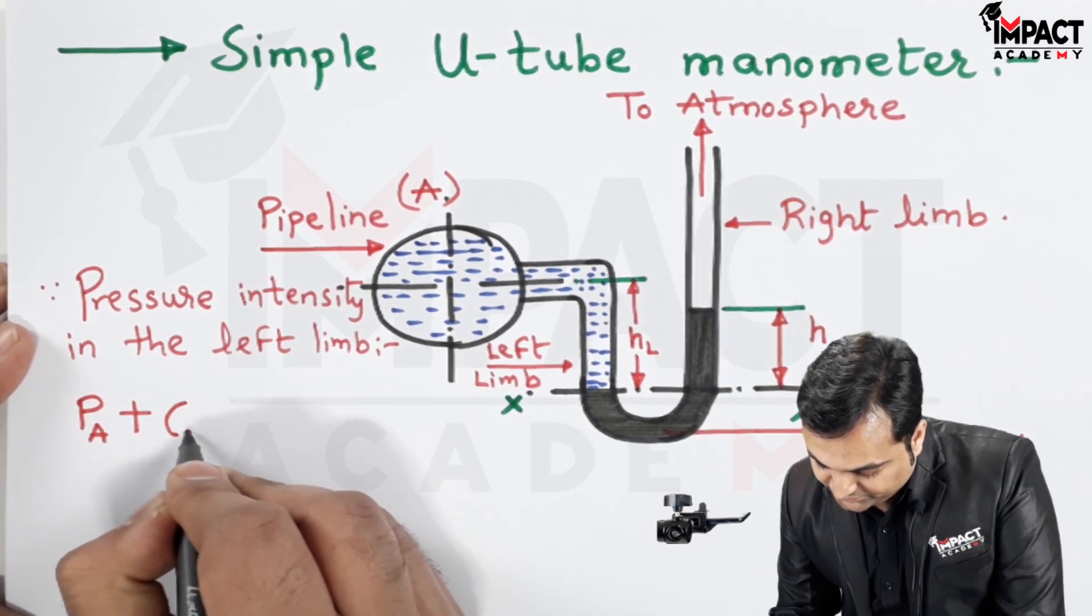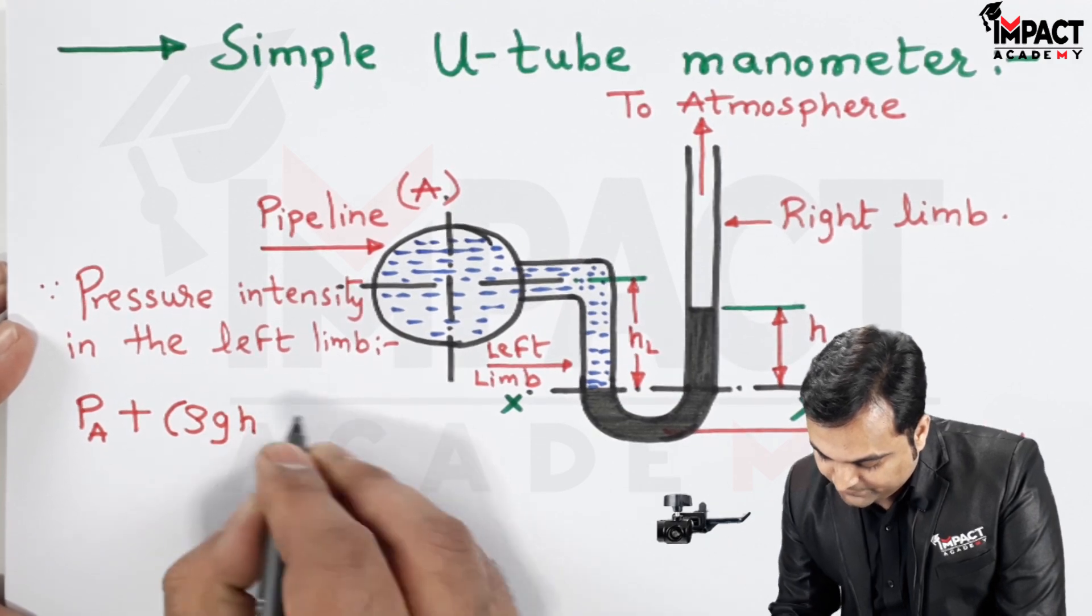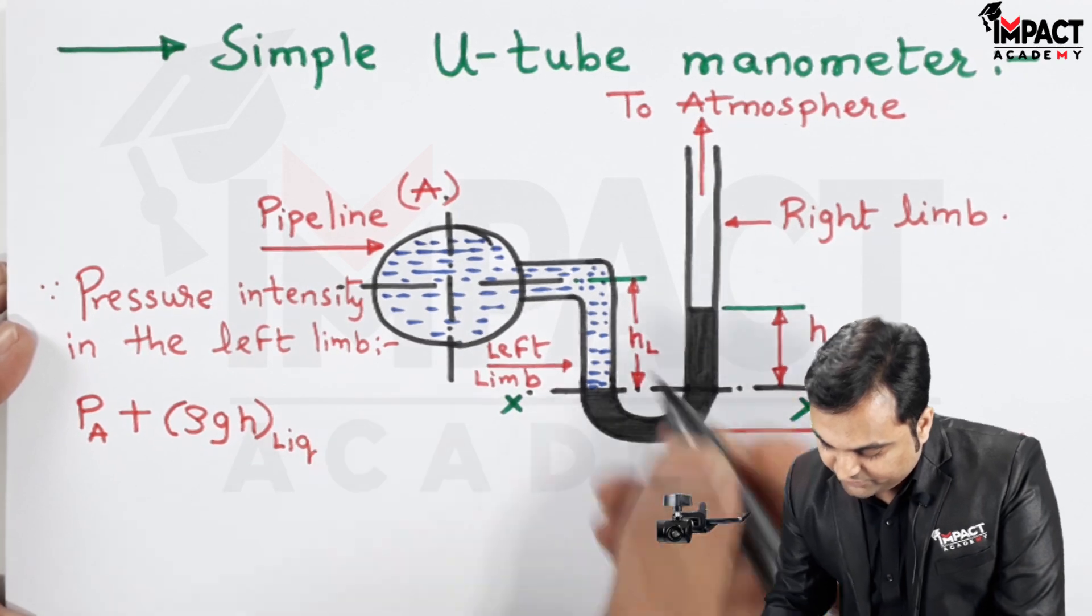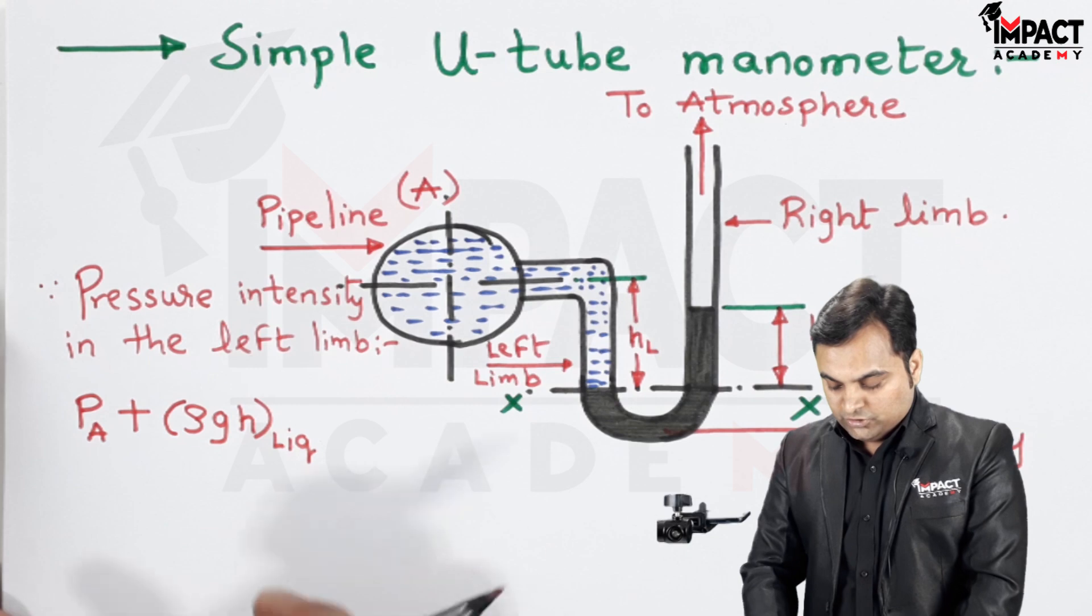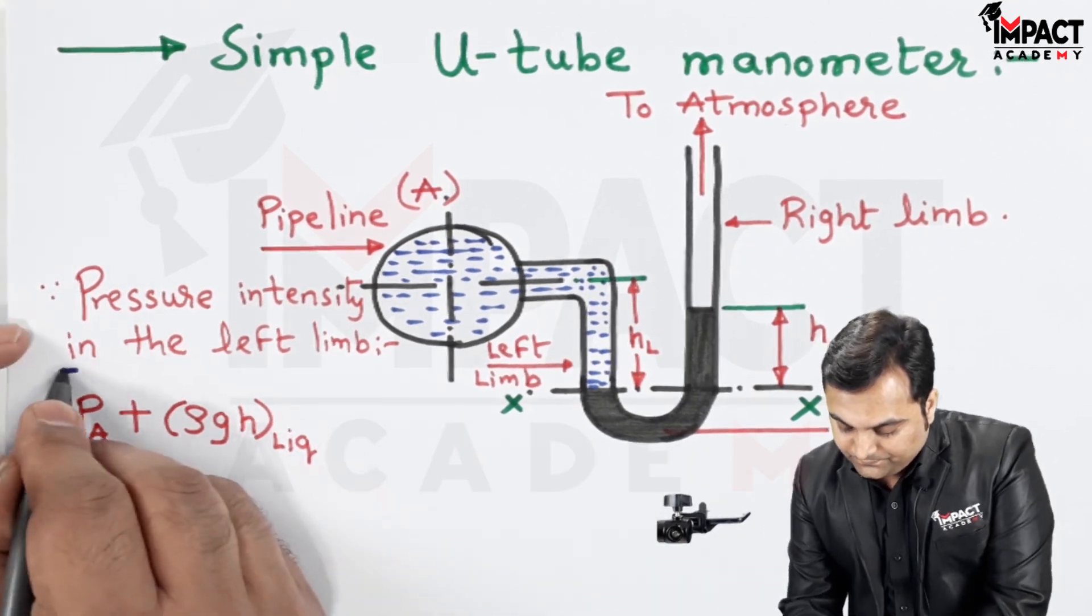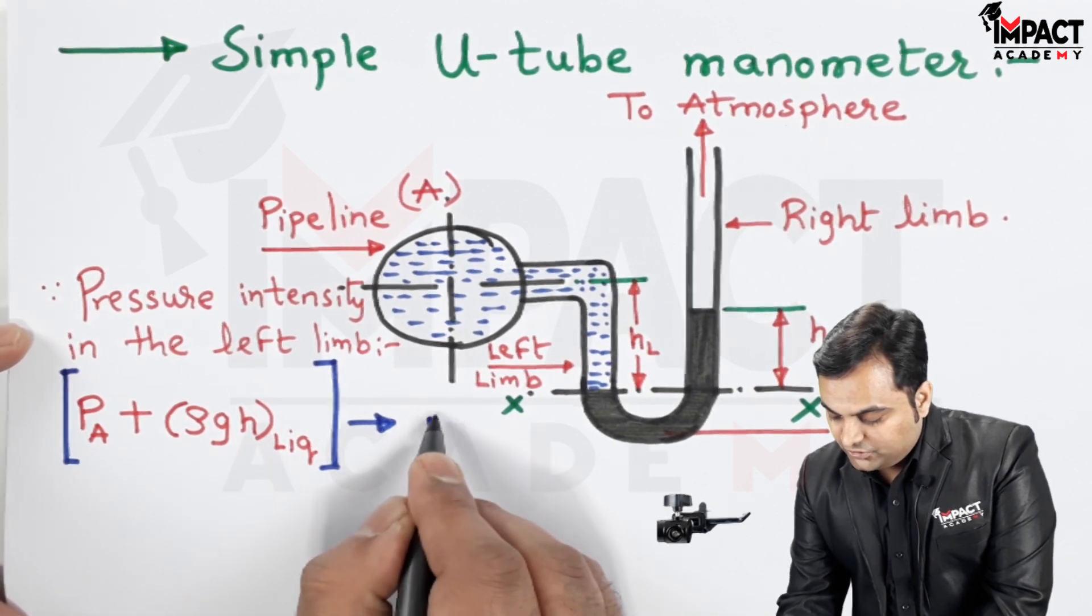Because of this, the pressure intensity is ρgH_L, and here I am writing the suffix liquid—it can be water, oil, or any other liquid. This much is the pressure intensity in the left limb. I am calling it as equation 1.